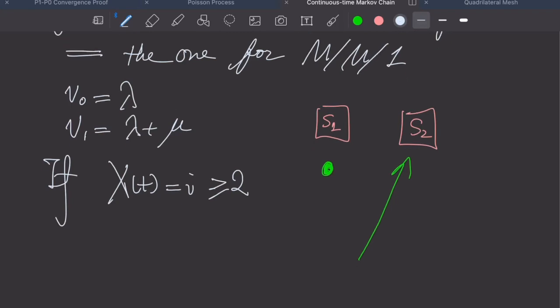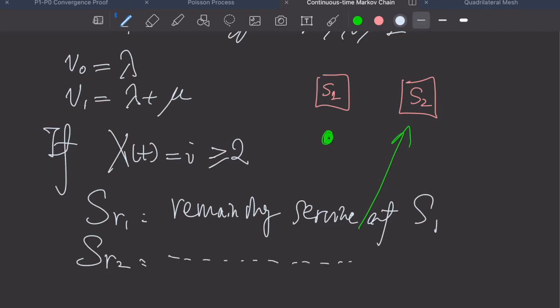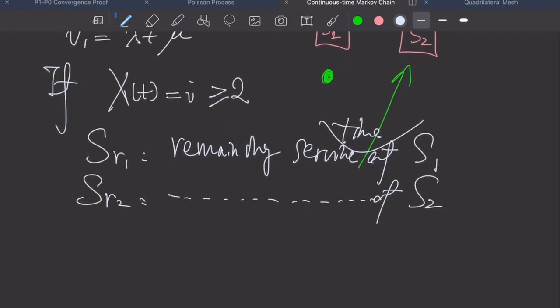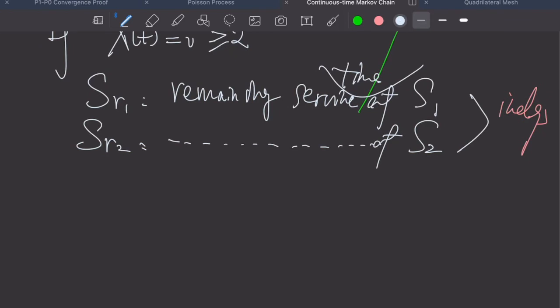Let's assume SR1 to be the remaining service time of S1, and similarly, SR2 is the remaining service time of server number 2. Keep this in mind, they are independent, first of all, and also they are memoryless, which follows the exponential distribution.